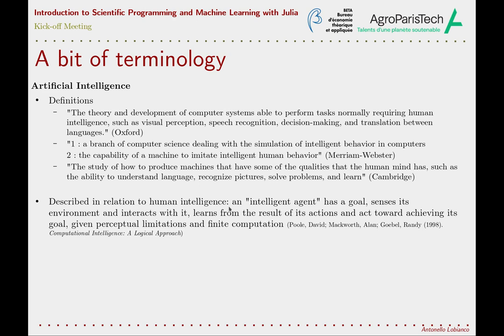There is another definition of intelligent agents that is a bit more pragmatic and doesn't depend on a comparison with human intelligence. Intelligence is defined rather as the capacity to adapt to the environment, sensing and acting over it to achieve the agent's own goal. My take is that intelligence can be thought of as the capacity to adapt, applied at the scale of the individual organism.